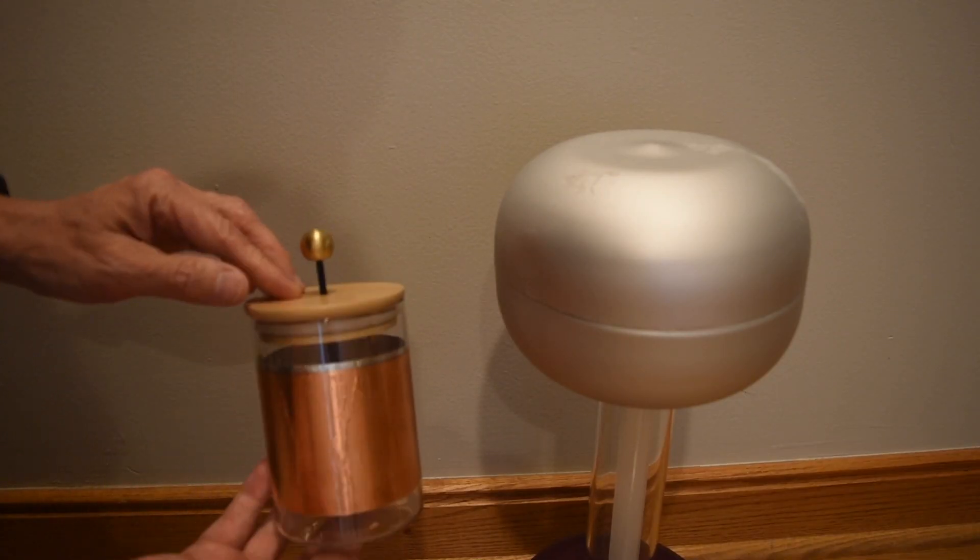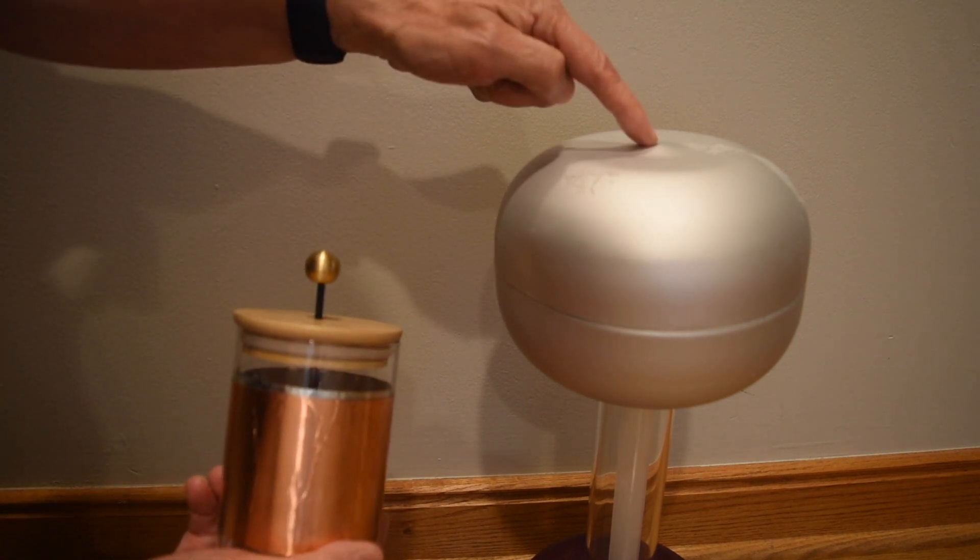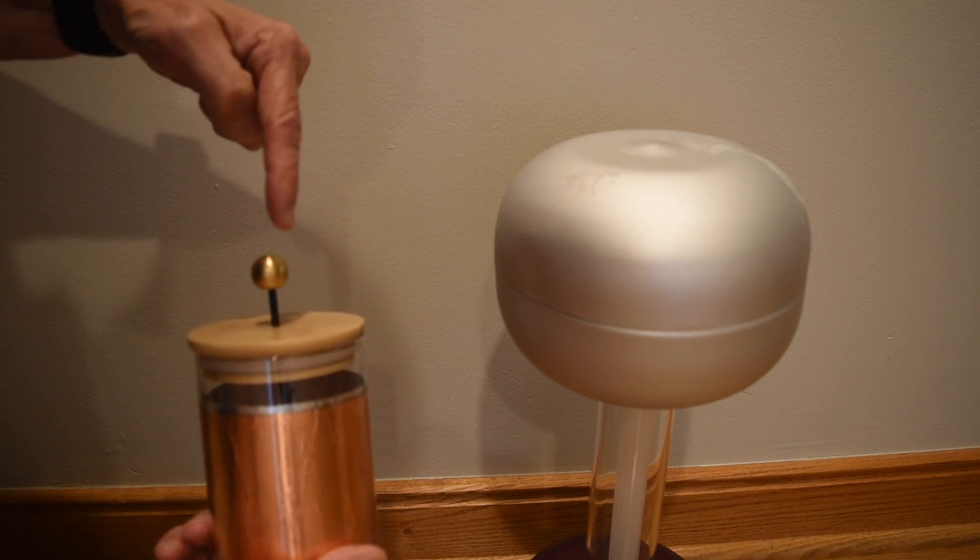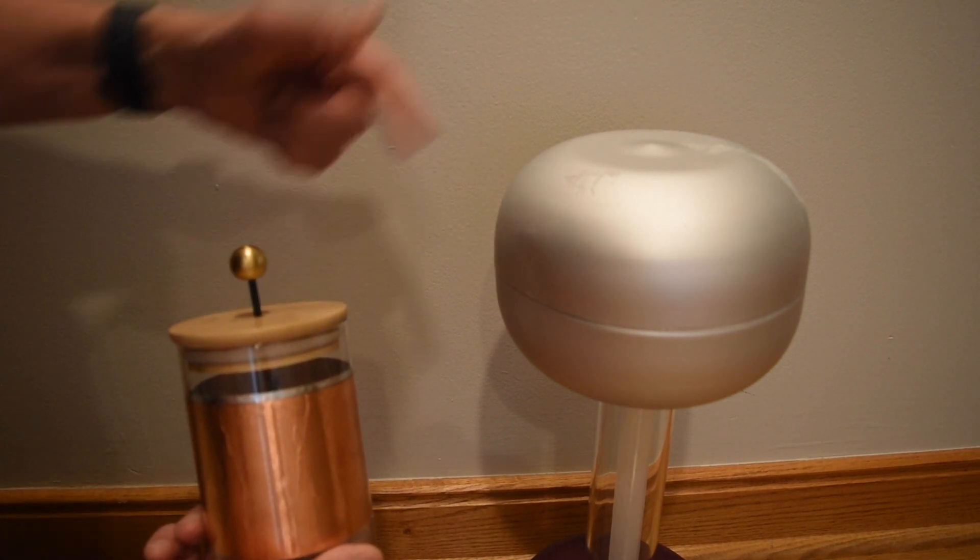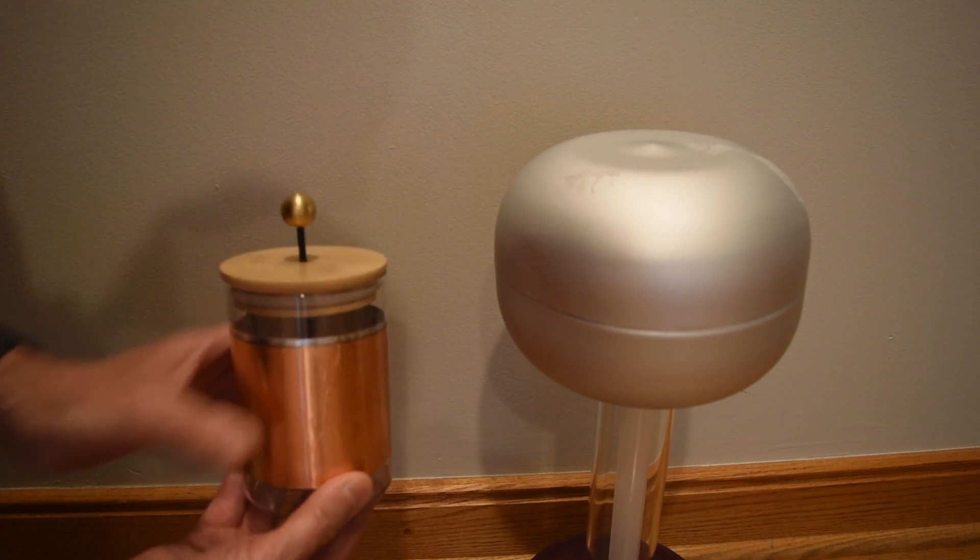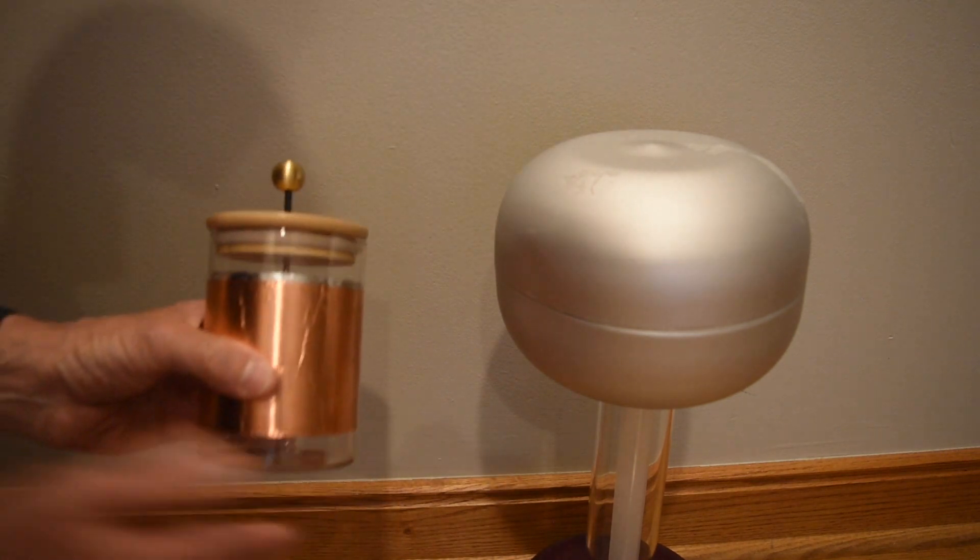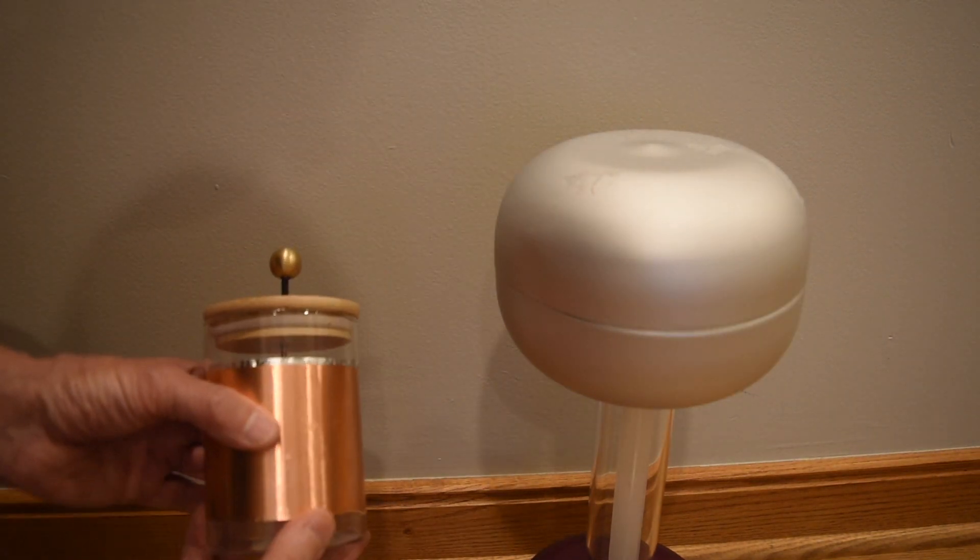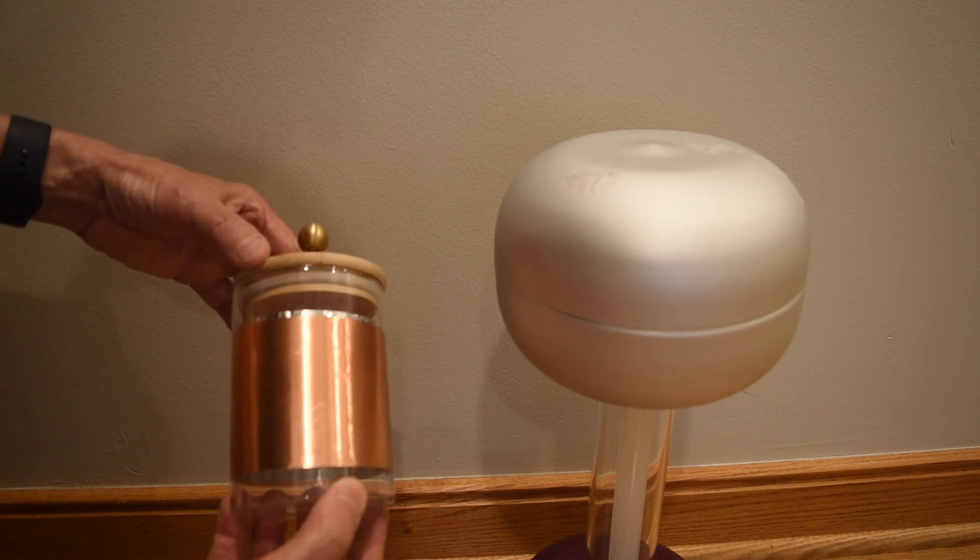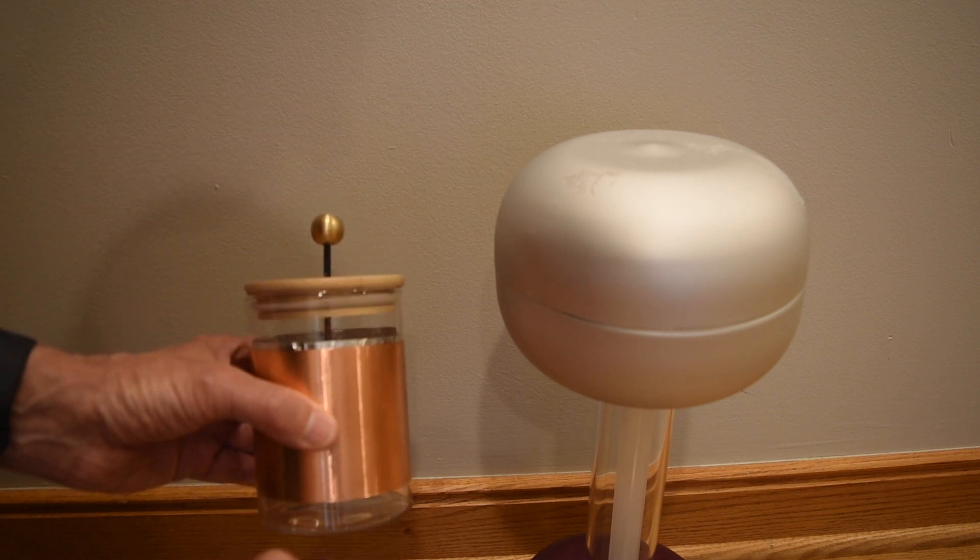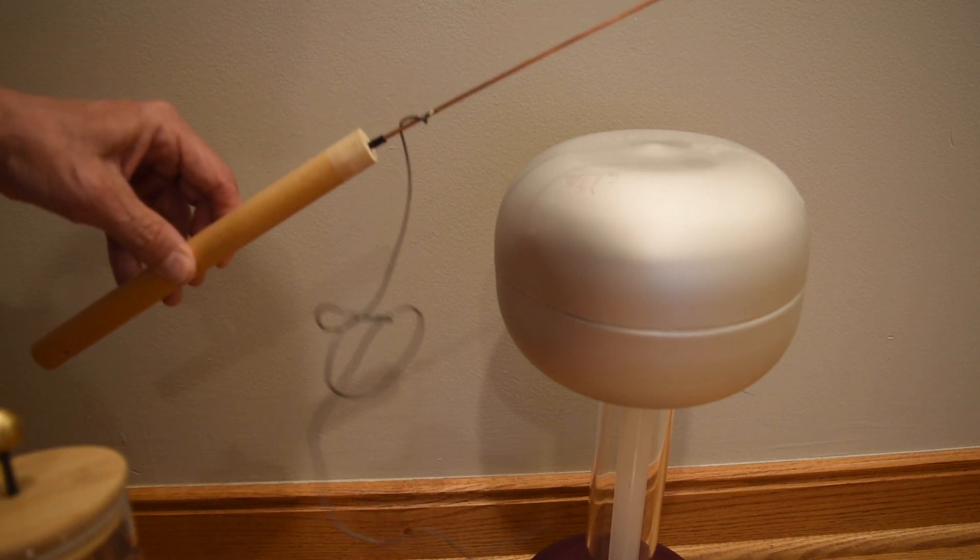This is a Leiden jar capacitor that I constructed. It has about a thousand times the capacitance of our Van de Graaff generator. If I make an electrical connection between the Leiden jar and the Van de Graaff generator, I essentially have the two capacitors in parallel, so the overall capacitance will be about a thousand times greater than that of just the Van de Graaff generator. Now for a given potential, I'll have about a thousand times the charge. That amount of charge would be very painful or even lethal, so instead of using my arm to discharge the Van de Graaff generator, I will use this discharge rod that I constructed.